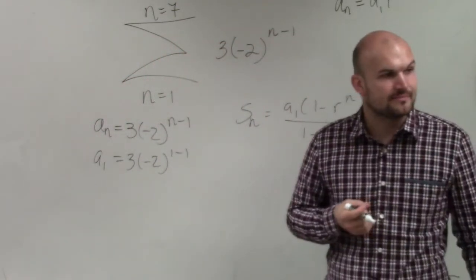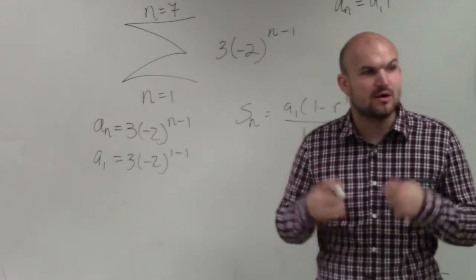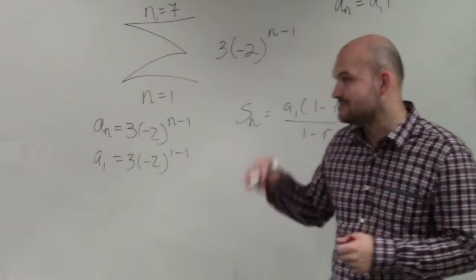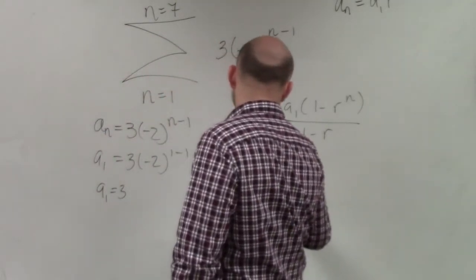1 minus 1 is 0. Negative 2 raised to the 0 power is 1. 1 times 3 is 3. So we got our first number.